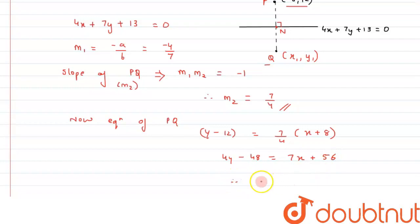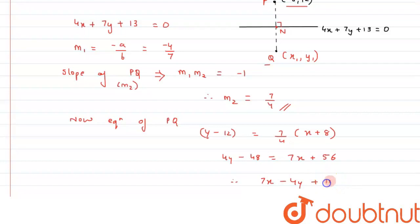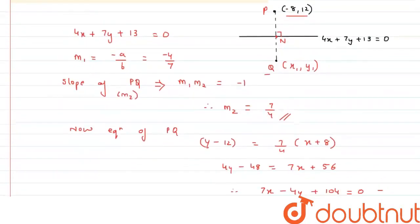Alright, therefore if we solve further, we get 7x minus 4y plus 104 equals 0. So this is the equation we have calculated for line PQ — let's call this equation number 1.